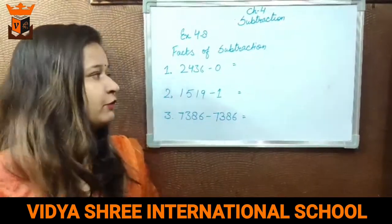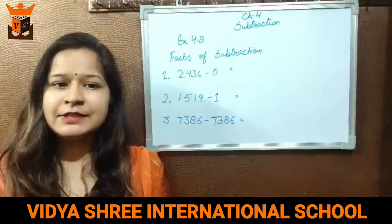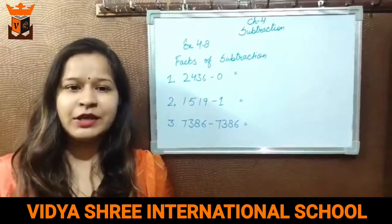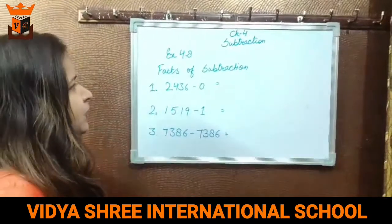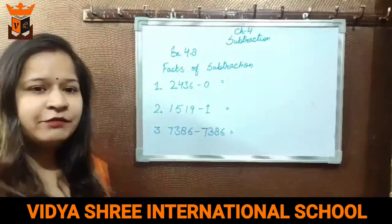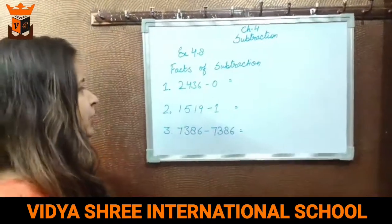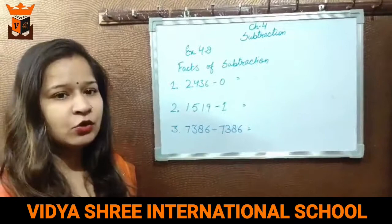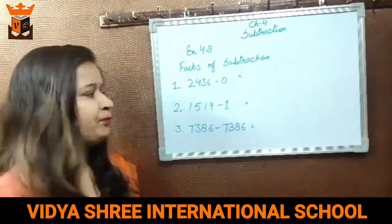In exercise 4.8, we will see some facts about subtraction. In exercise 4.9, we will see addition and subtraction of some numbers. We will start from facts of subtraction. There are some facts about subtraction we have to remember. The first one is: when we subtract 0 from any given number, we get the number itself.